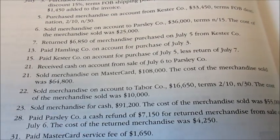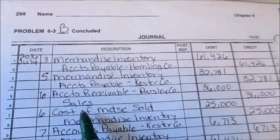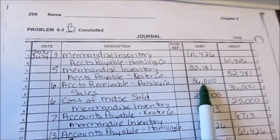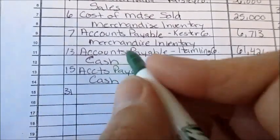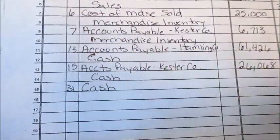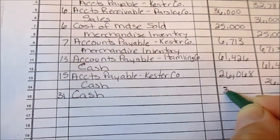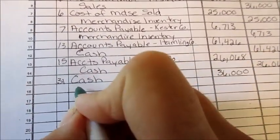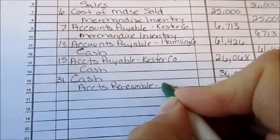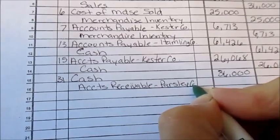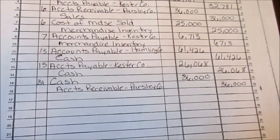On the 21st, we received cash on account from the sale of July 6th to Parsley Company. Looking at July 6th, Parsley Company had $36,000 worth of merchandise. So on the 21st: debit Cash for $36,000, and Parsley Company no longer owes us that amount — credit Accounts Receivable — Parsley Company — for $36,000.